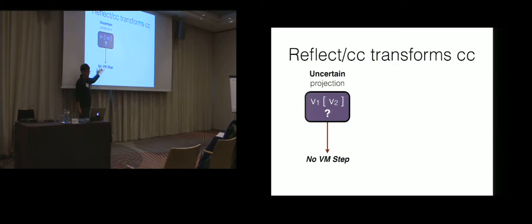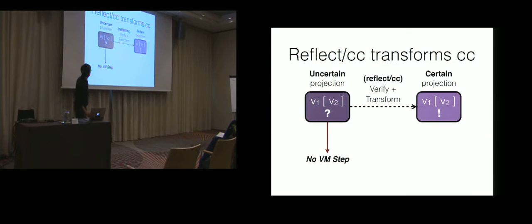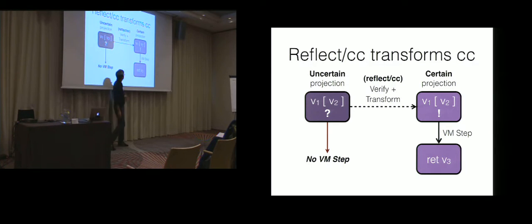And our VM actually won't even have a stepping rule for this, so we won't be able to run this program. The trick is before we get to the point where we actually have to run that opcode, we want to transform into this verified kind, the certain kind, where we know it's going to work. And then there's just some standard kind of stepping rule that says how to step a field projection.